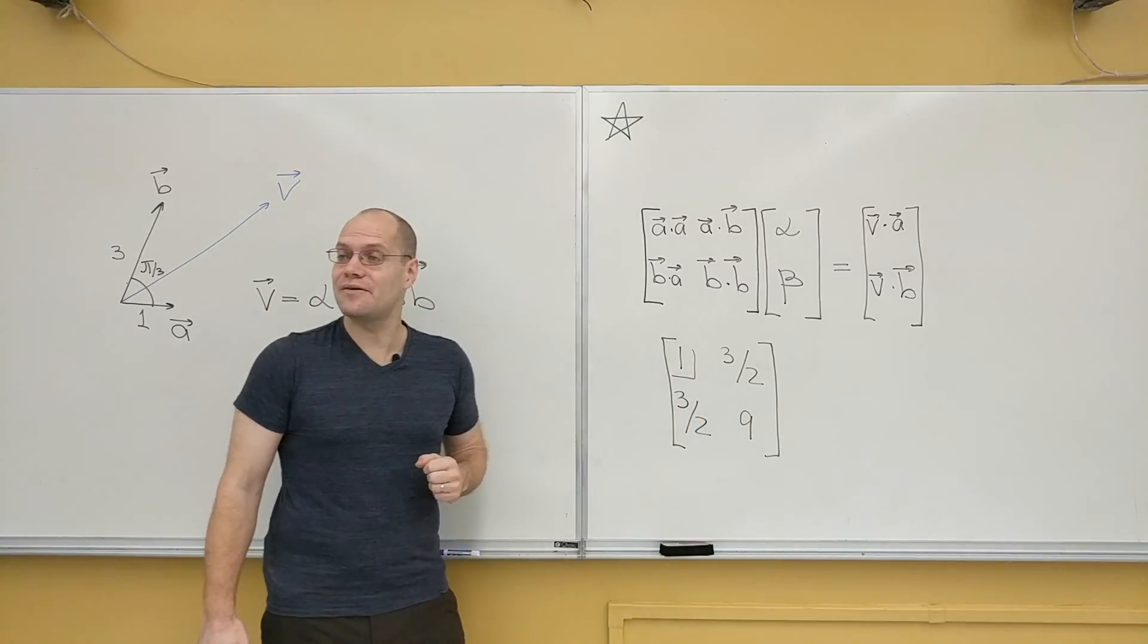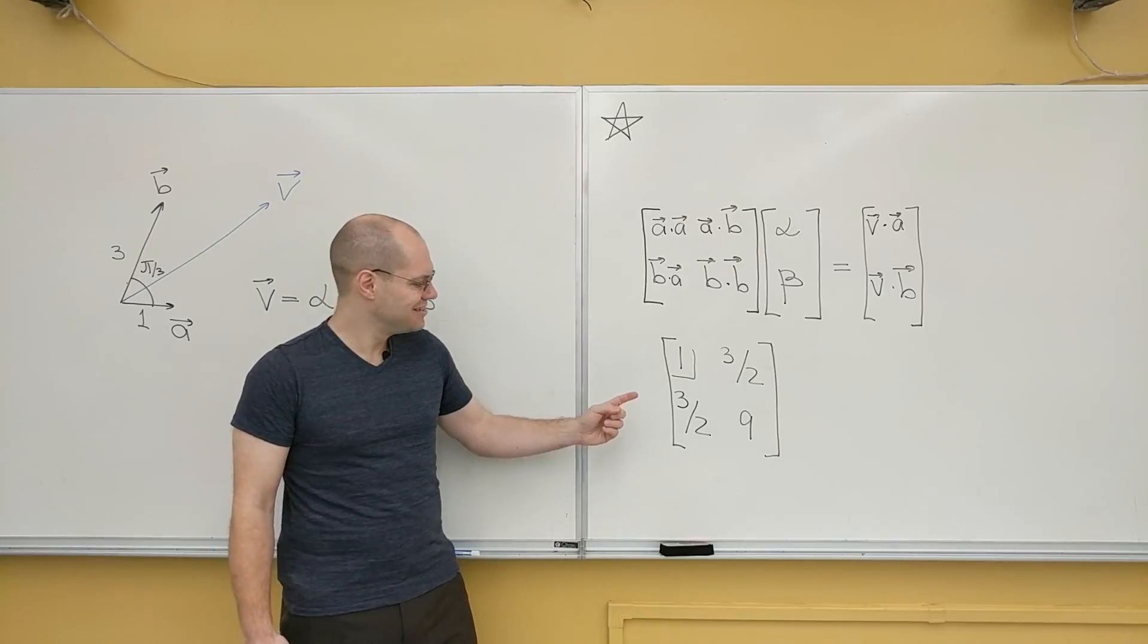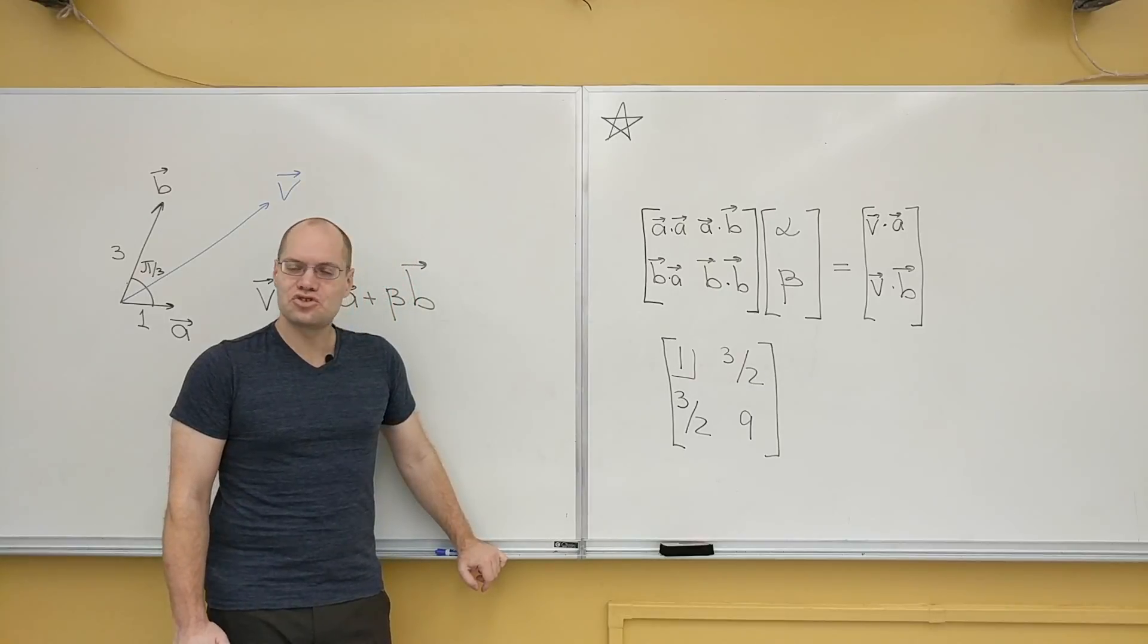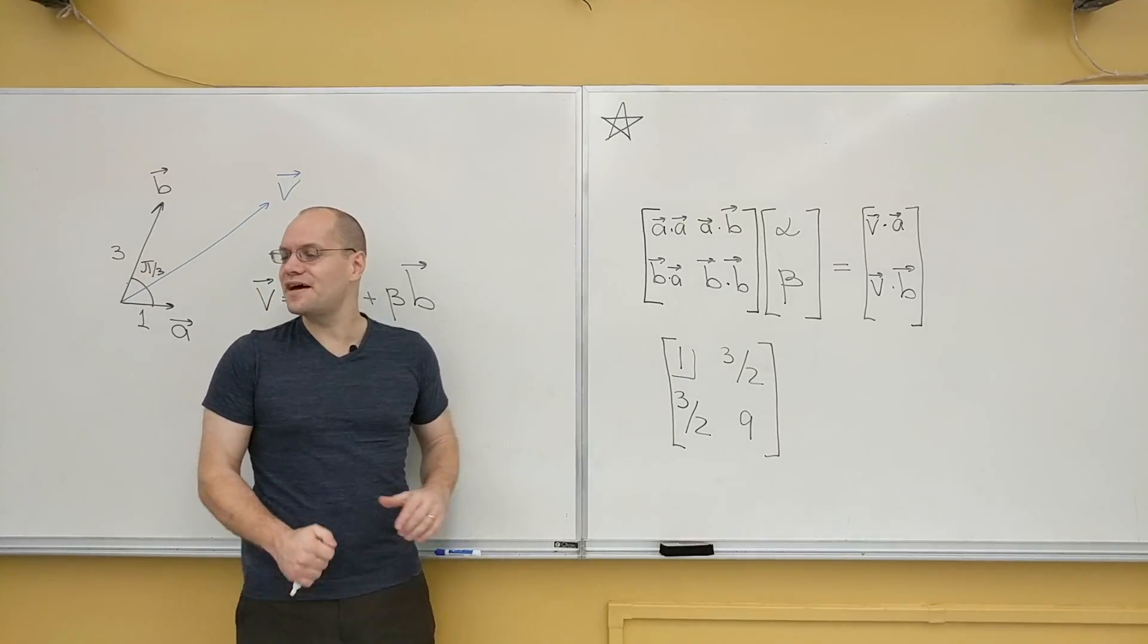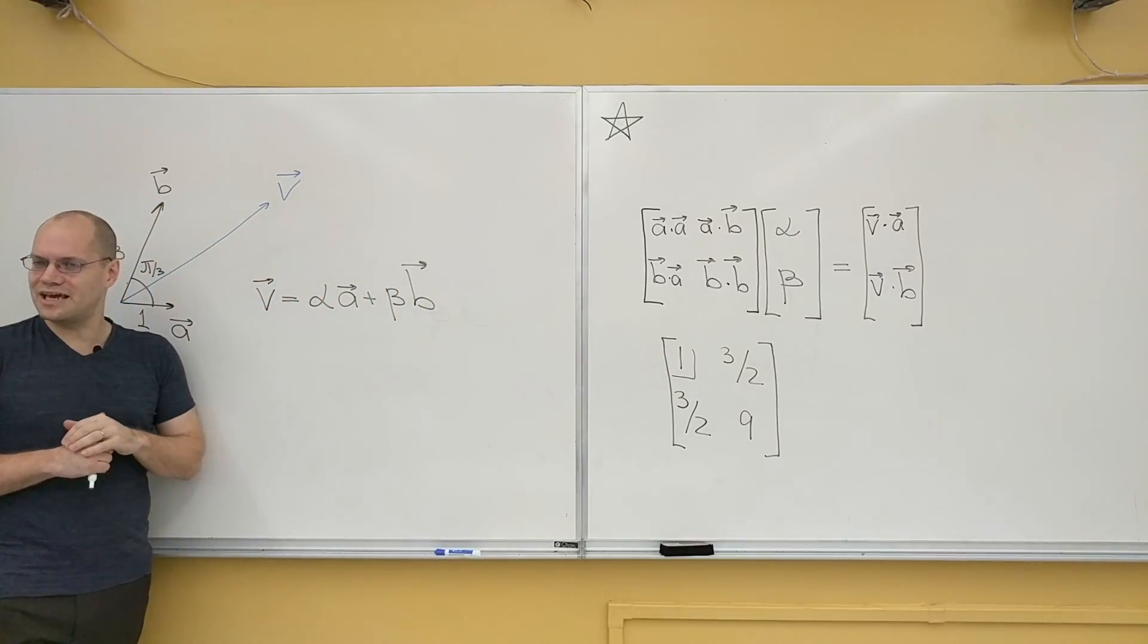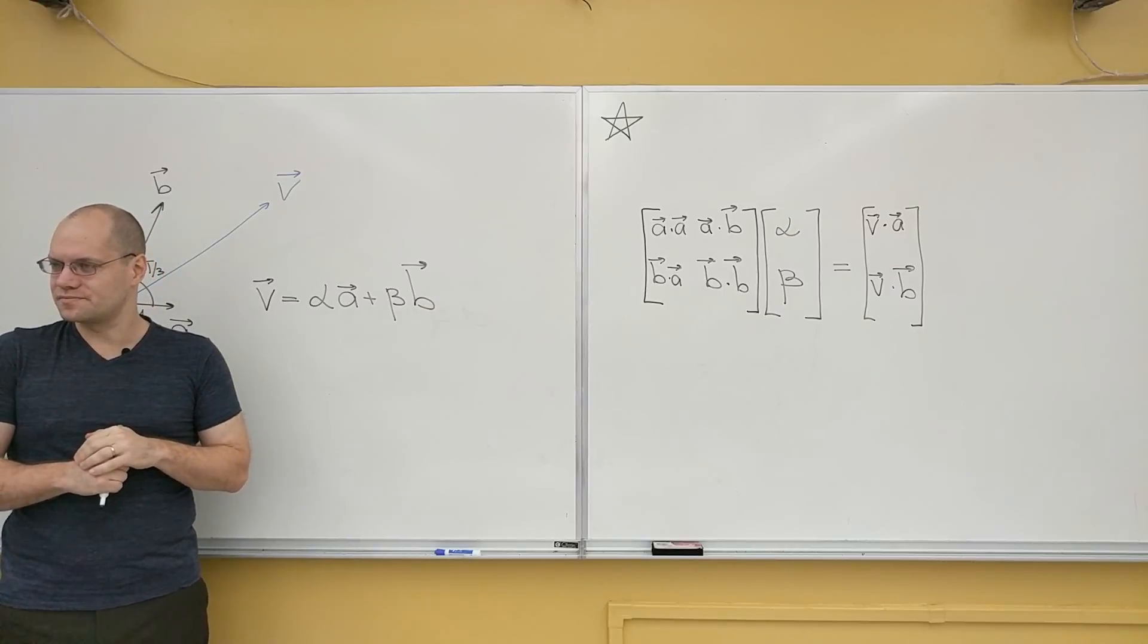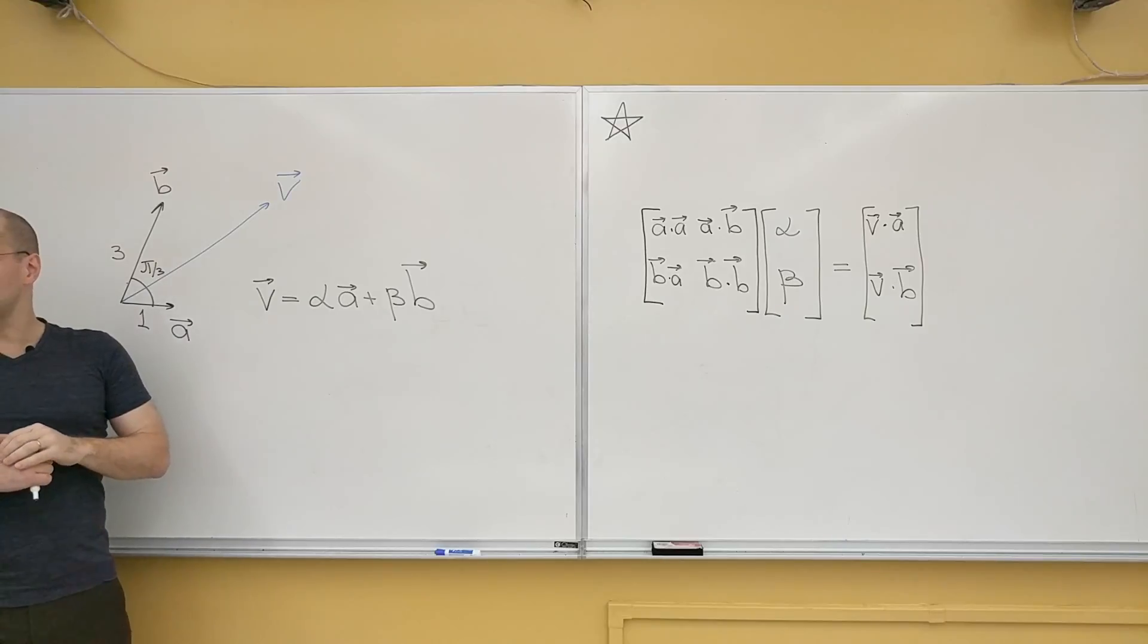And the determinant of this matrix is... it's 9 minus 9 quarters, so it's 27 over 4, so greater than 0. So this matrix is in fact positive definite. But the statement is that it's positive definite for any two vectors a and b. So let's assume that a and b are two completely arbitrary vectors and that v is an arbitrary vector as well.